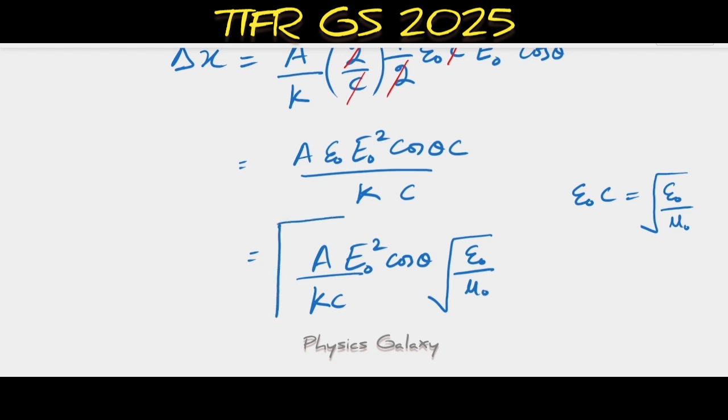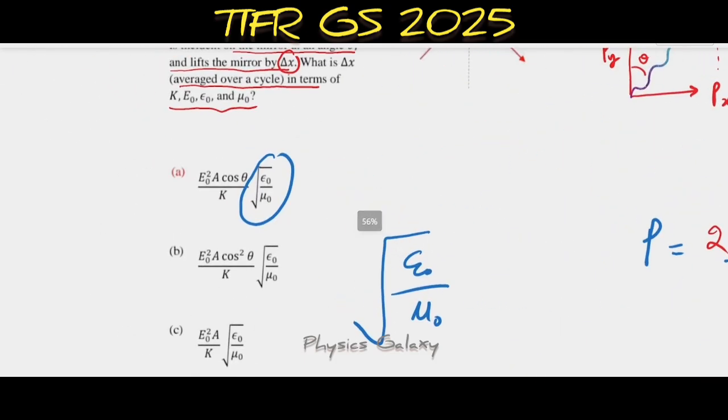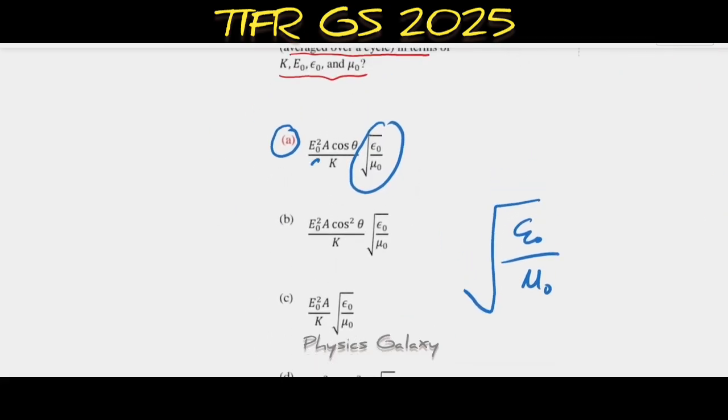This is our final Δx. If you check the answers, option A is marked as correct, but there is no c in the denominator. This question has a problem - c should be in the denominator. Anyone can challenge this and point out that c should be in the denominator. Thank you.